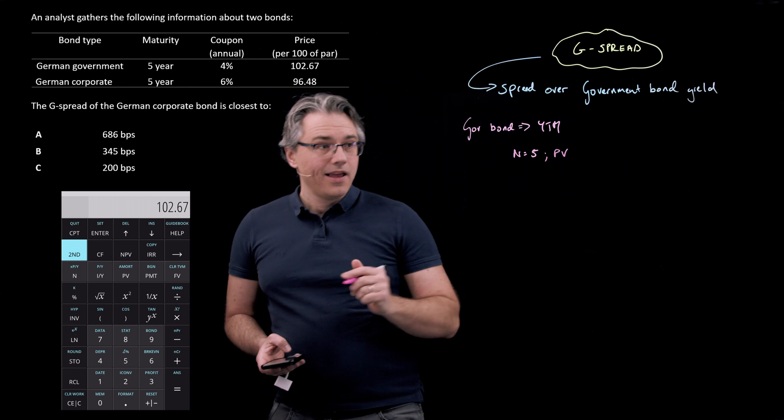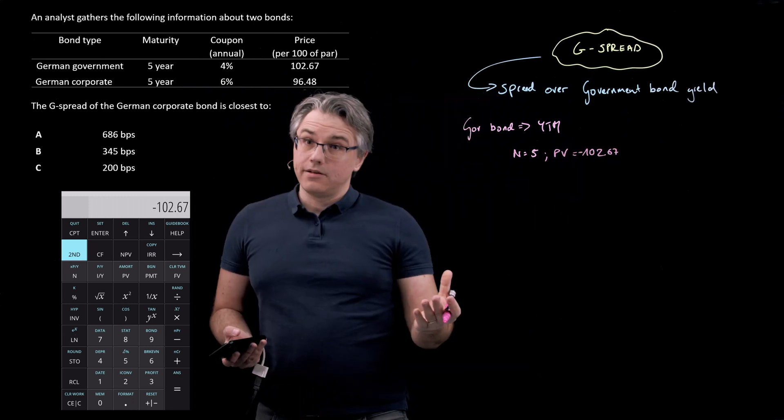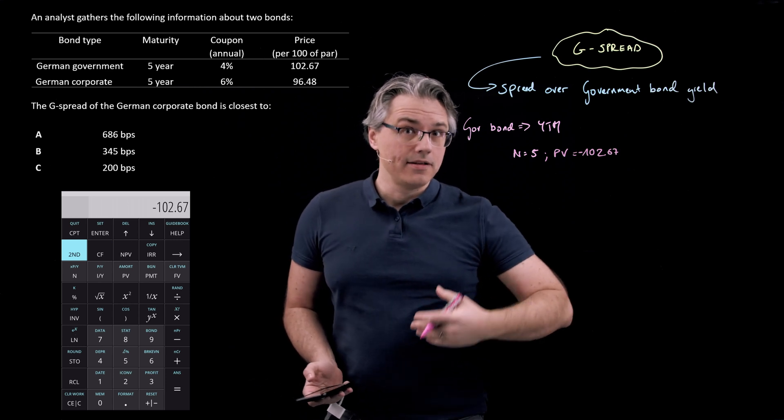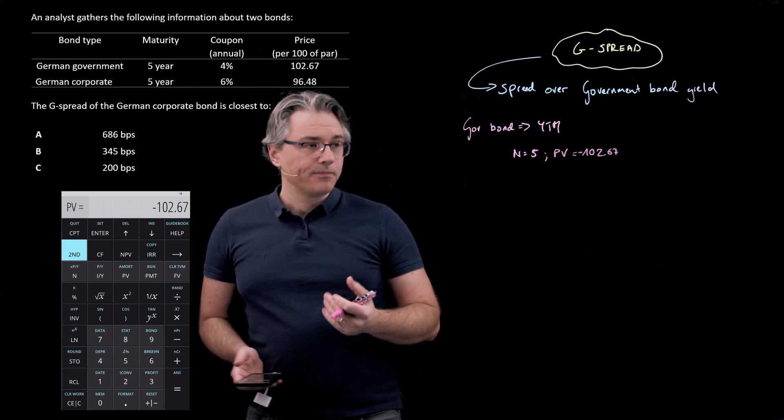102.67 for the government bond, 102.67. However, make this a negative value, so as to tell the calculator, it's the price we're paying. So PV, that's the parameter.